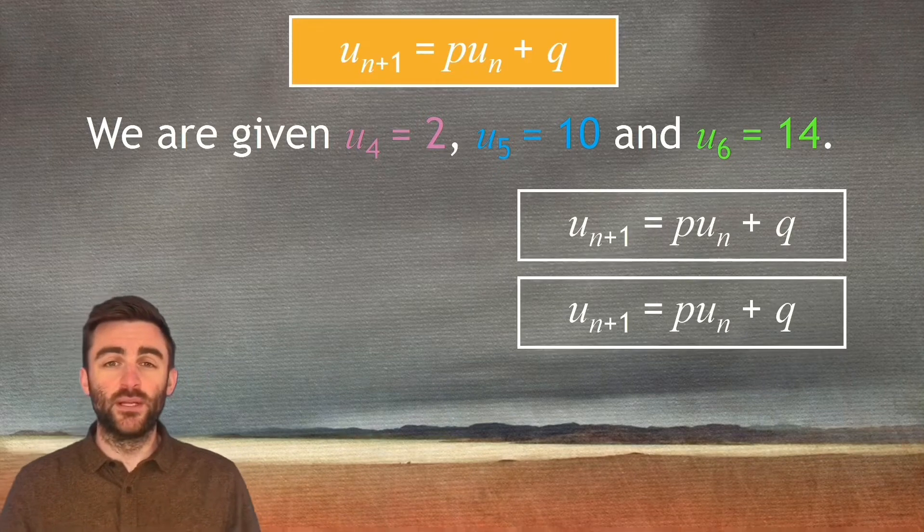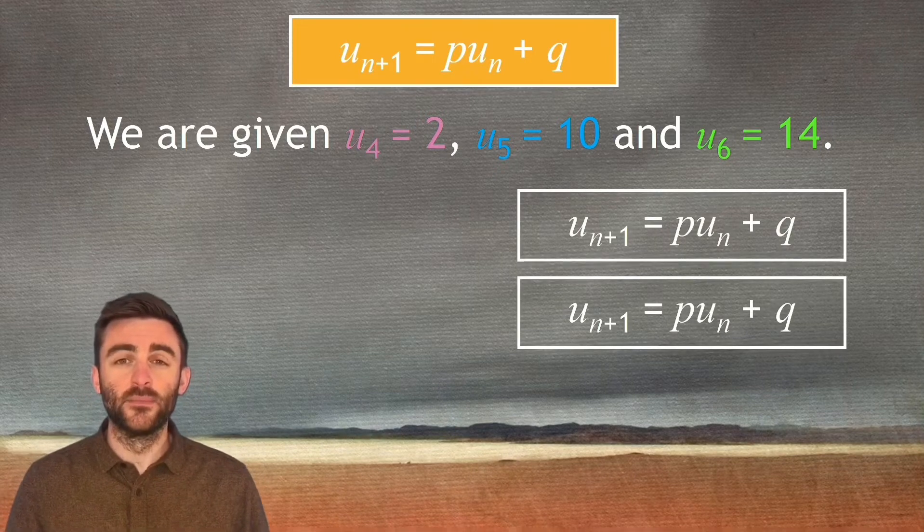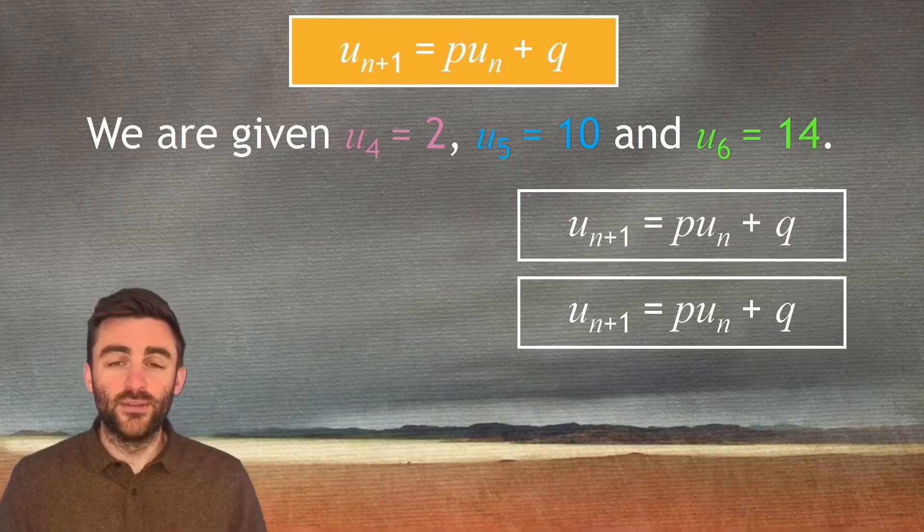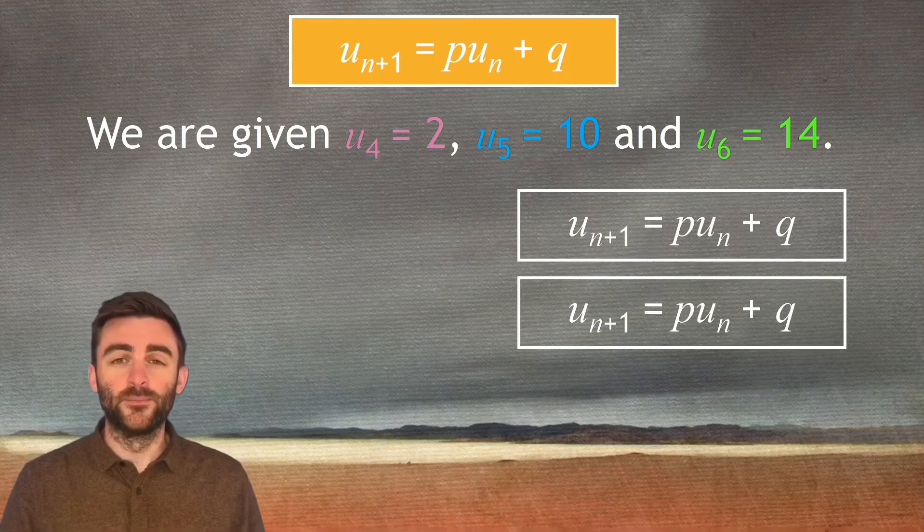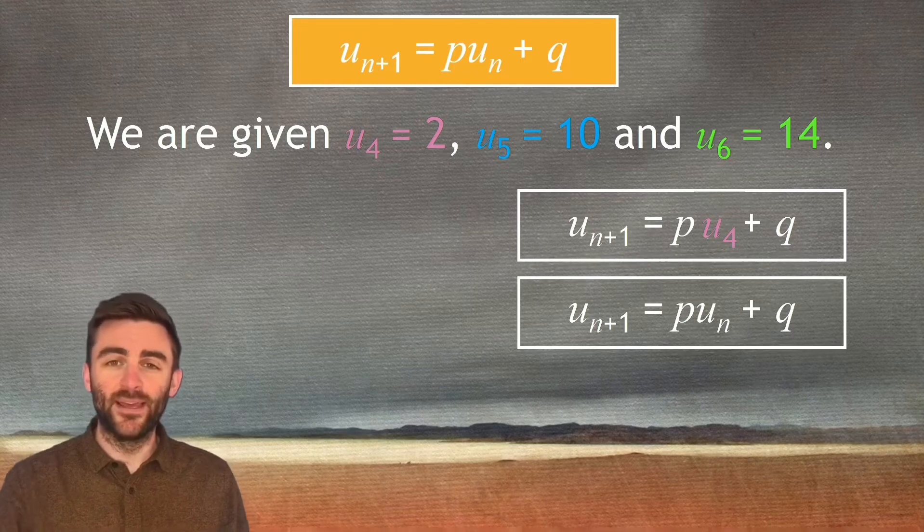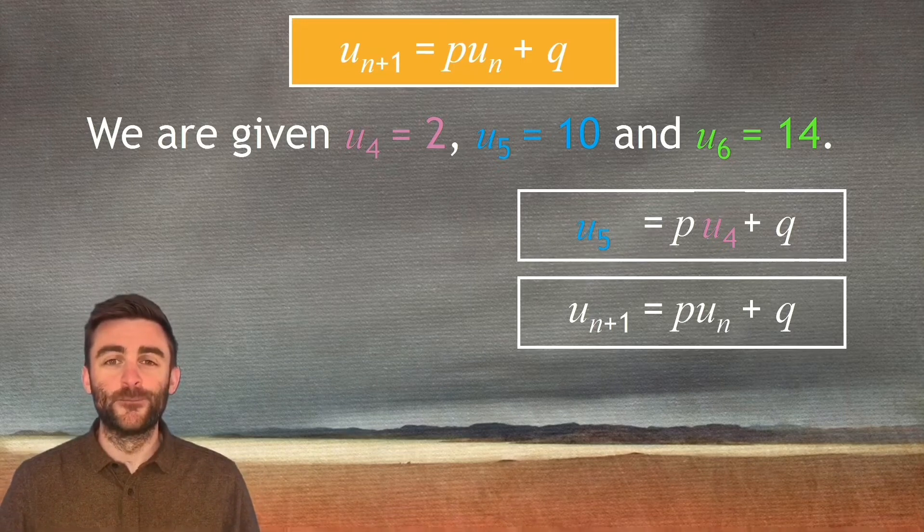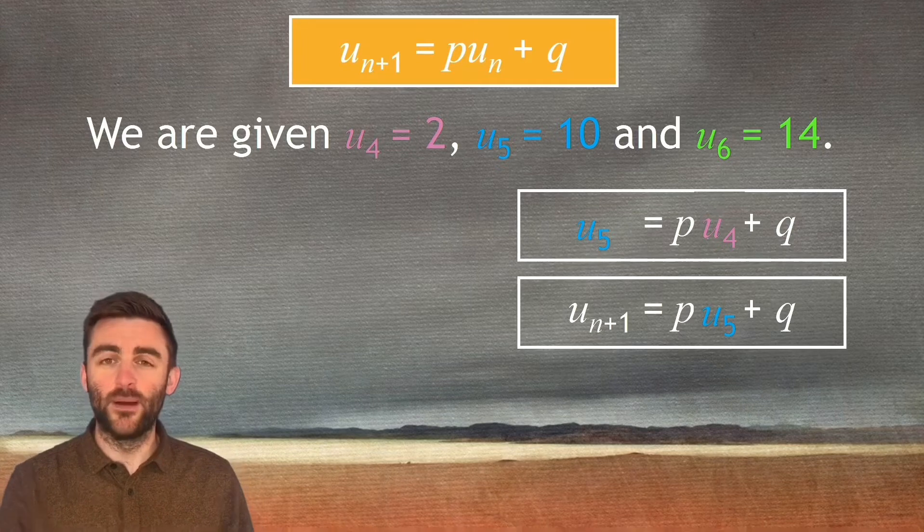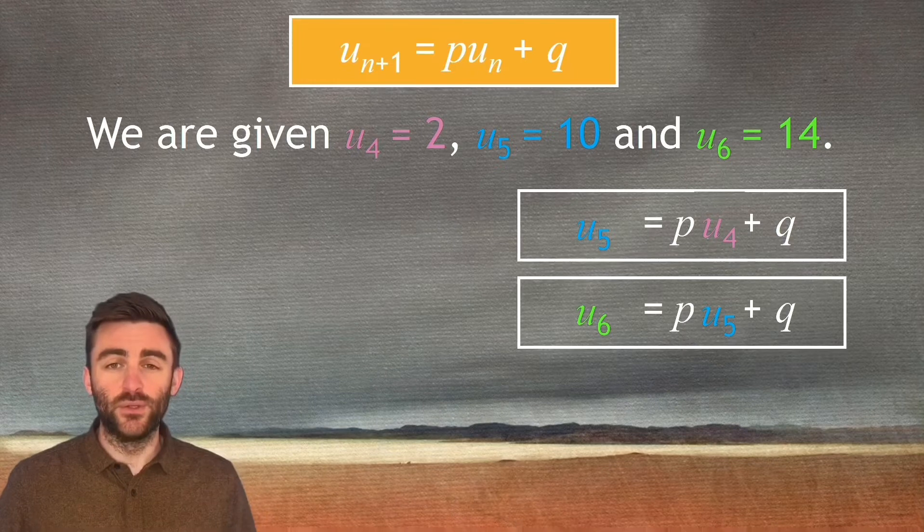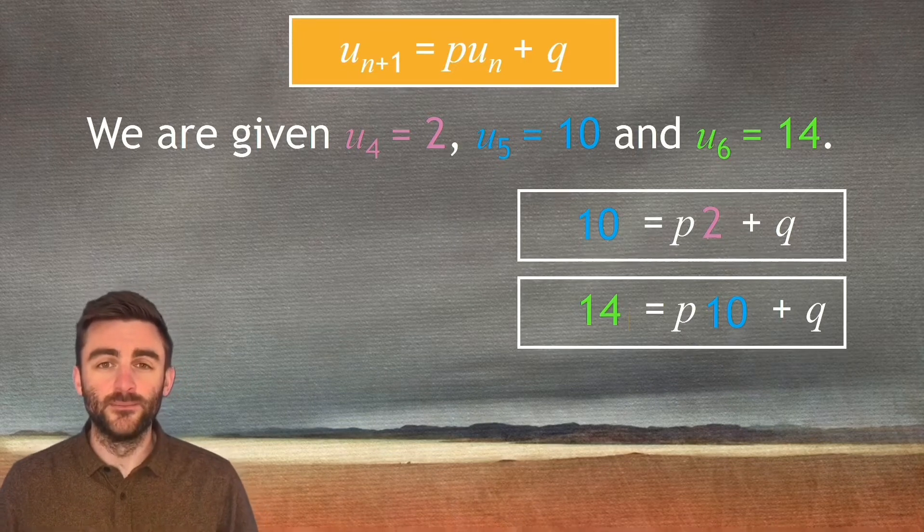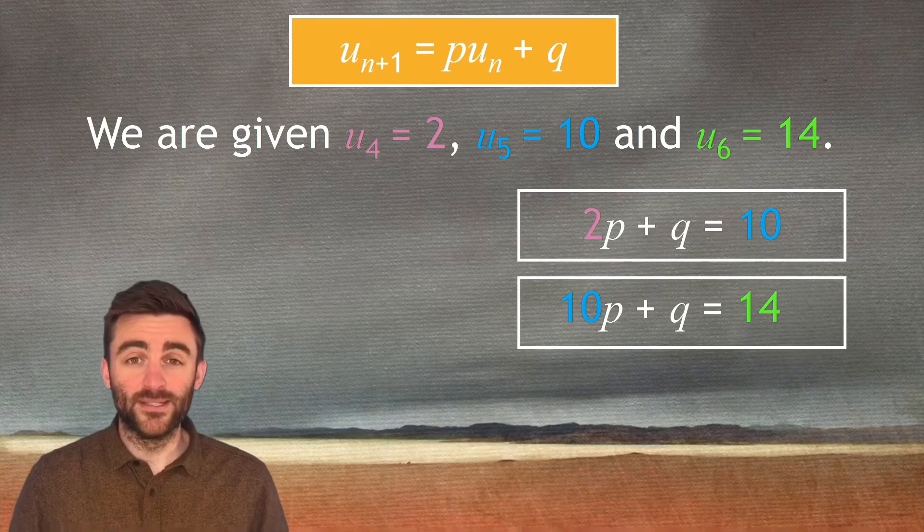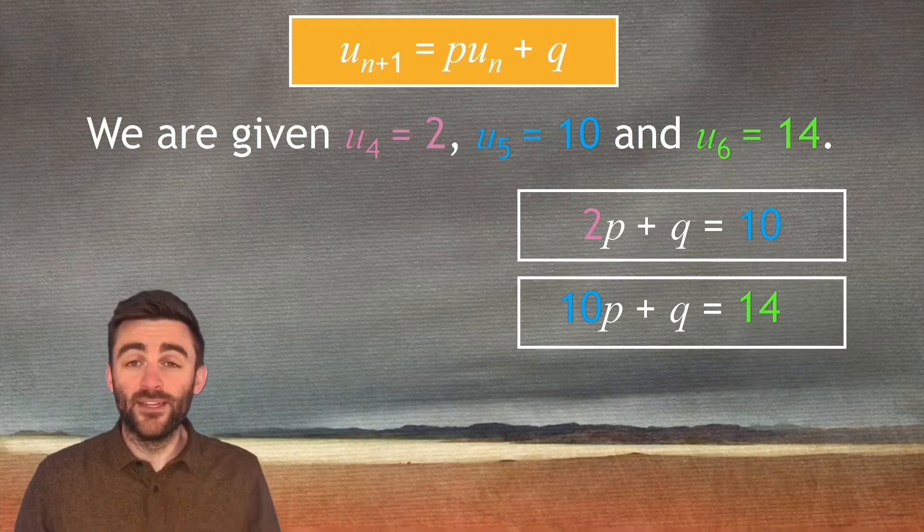So I've just made two copies of the recurrent relation underneath there, and we're going to plug in some values. Remember what a recurrent relation does - it takes a term and it finds the next term. So if I plug in U4 into the first recurrence relation, I know the bit on the left must come out as U5. If I plug U5 in, then I know the bit on the left would come out as U6. So knowing that all of that's true, I can then substitute numbers in in place of those terms. Now a quick bit of reordering gives us what are clearly simultaneous equations, and then it's just a case of solving those.